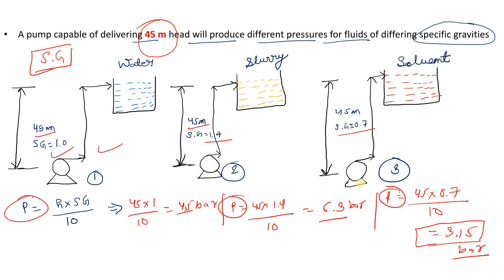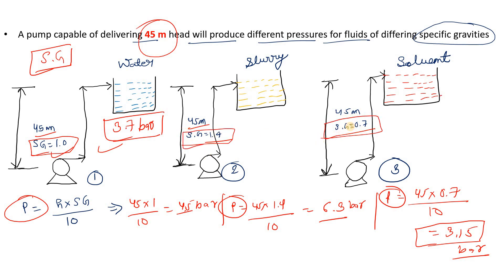Now please let me know in the comments box: if there is one pump capable of delivering 3.7 bar pressure, what will be the head that pump will develop for specific gravity 1, specific gravity 1.4, and specific gravity 0.7 — that is for water, slurry, and solvent scenarios?